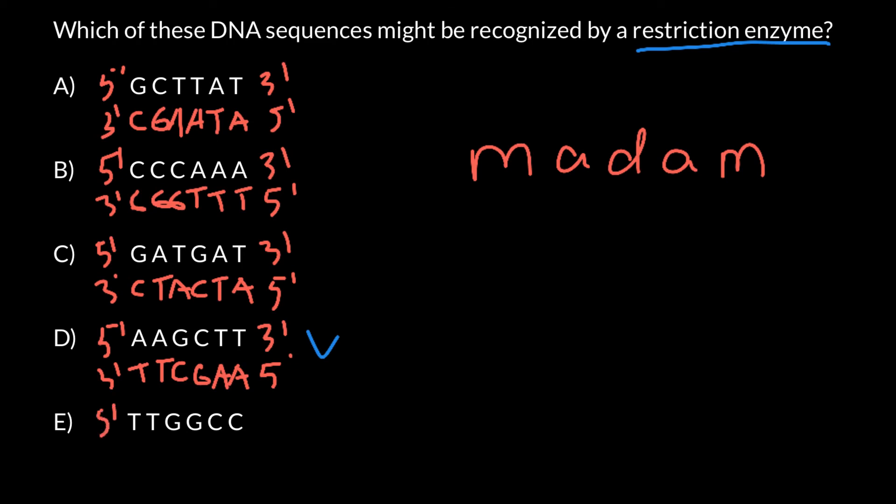So, five prime here, three prime here. Zymine, zymine, cytosine, cytosine, and adenine, adenine. And again, as you see, this is not a palindromic sequence, because the top strand and bottom strand from five prime end to three prime end are read differently.